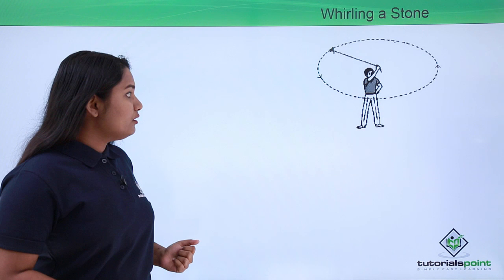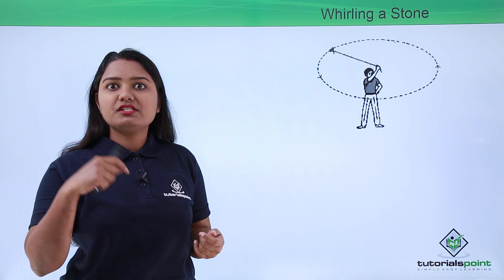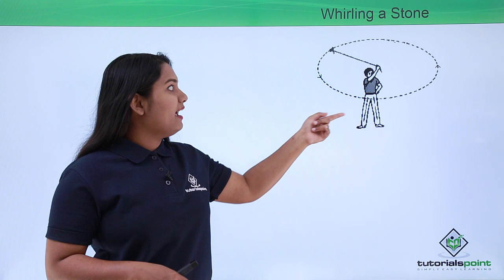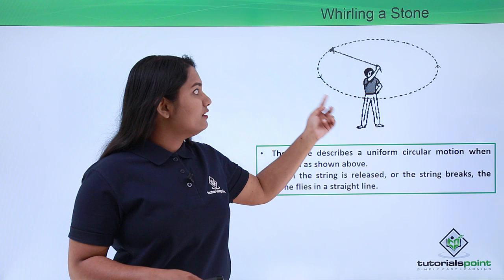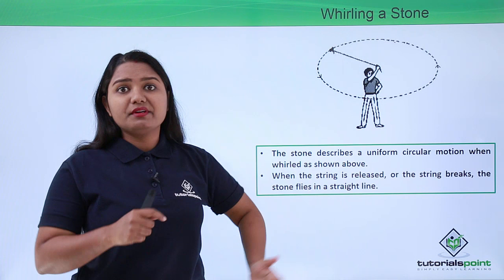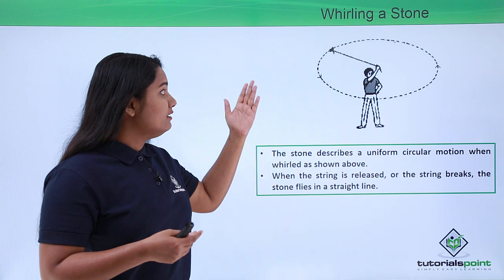We'll start with an activity where we whirl a stone tied to a string. We hold the other end of the string and whirl it, and the stone moves around the hand in a circular path — a uniform circular motion. Now when the string is released or breaks, the stone no longer continues in circular motion; it flies away in a straight line.